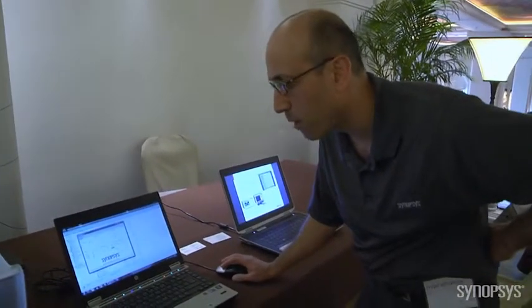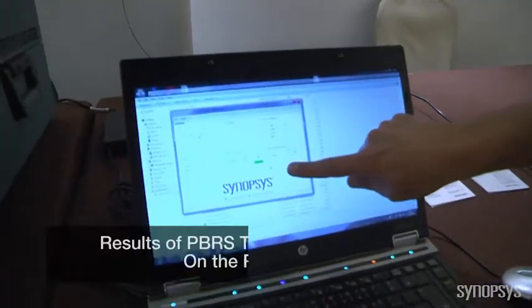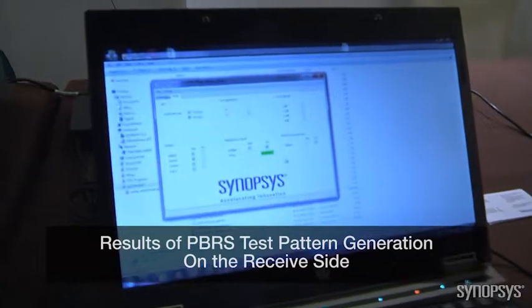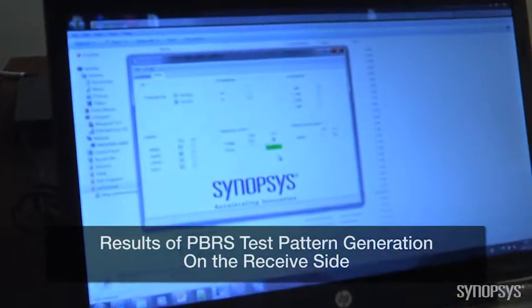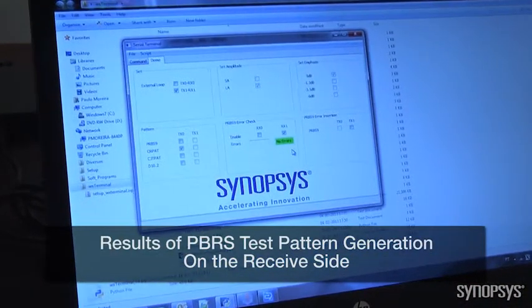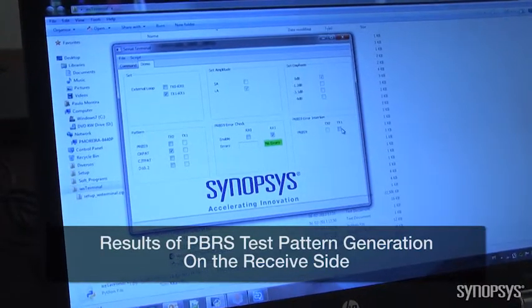So we are using it in loopback mode, the French mid plane, which is generating a PRBS pattern. And it's being measured by the reception side. Right now, you can see no errors have been captured. We can also inject some errors.